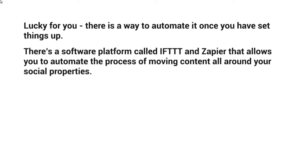There's a software platform called IFTTT and there's another one called Zapier.com that allows you to automate the process of moving content all around your social properties. So you could take a YouTube video and have it pushed — meaning embedded — on your WordPress site, and then have it shared on your Facebook fan page, your Twitter page, your Instagram, and all of that. You have essentially what we call triggers: whenever the trigger happens, then something else happens. IFTTT stands for 'If This Then That' — if this happens, then what.